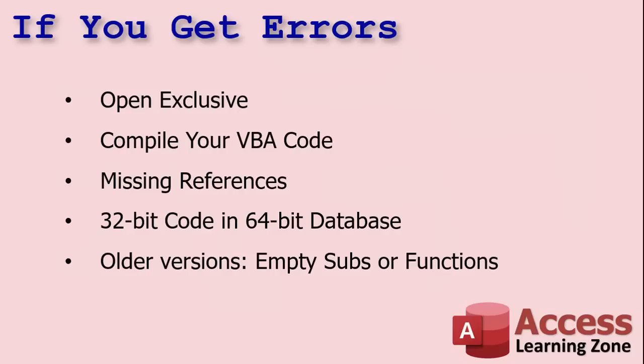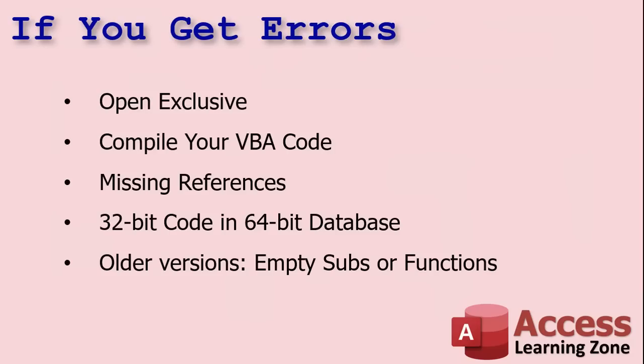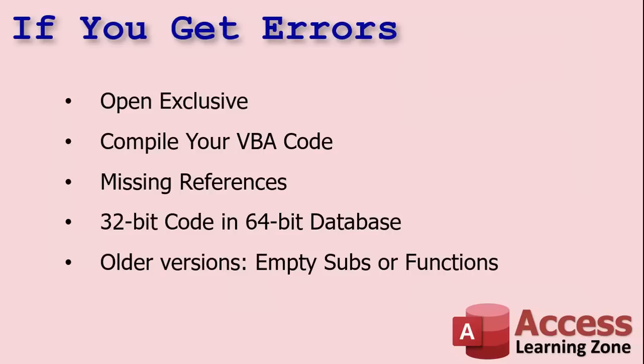You may also have missing references, especially if you've copied this database to another system — I've got a video on missing or broken references. If you're making a 64-bit ACCDE file and you've got 32-bit code in there, that's not going to work either. Also, keep in mind that ACCDE files are specific to the bitness version — if your users have 32-bit Office, your database has to be 32-bit, and vice versa; you can't flip-flop between the two. And in some older versions of Access, empty subroutines or functions might cause an error, so go get rid of those or put a comment in there.